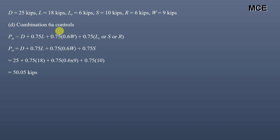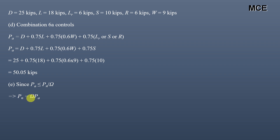Just as we checked all combinations for LRFD, you can verify the ASD combinations and confirm that 6a governs. Since the allowable load must be less than or equal to the nominal strength divided by the safety factor, the nominal strength equals the safety factor times the allowable load: 1.67 × 50.05 = 83.59 kips. This is the required nominal strength of the column for ASD. This approach applies to columns, beams, or any tension member with multiple loads — check all combinations and use the largest.